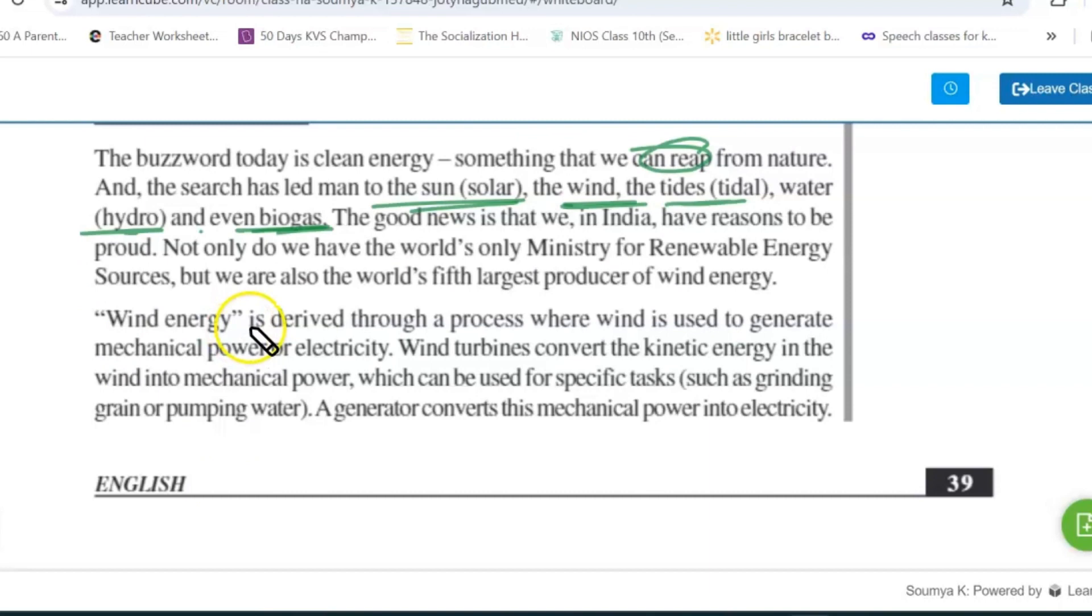So wind energy is derived through a process where wind is used to generate mechanical power or electricity. Wind turbines convert the kinetic energy in the wind into mechanical power, which can be used for specific tasks such as grinding grain or pumping water. A generator converts mechanical power into electricity.